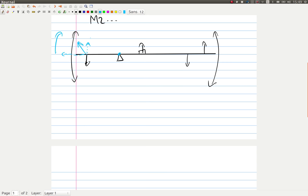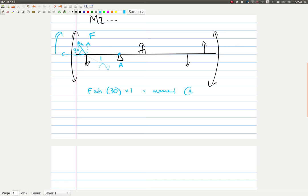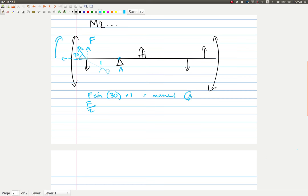So if we had a force of f newtons, and it's one meter away, and this angle here is 30 degrees, then all we do is resolve our force. F sine 30 times one equals the moment around A, around our pivot. Lovely, which is by the way f over two. And that's where M2 stops.